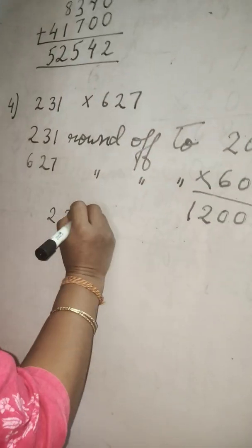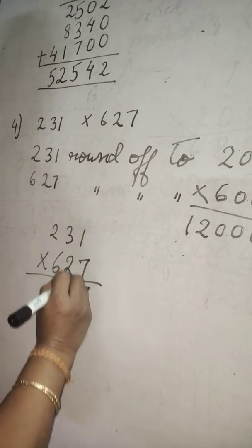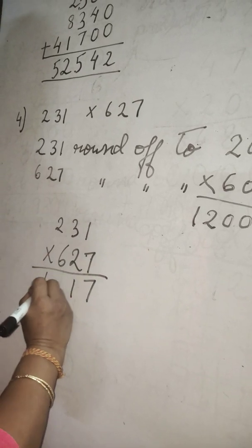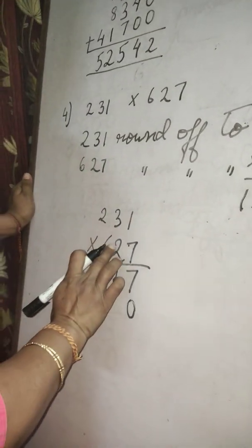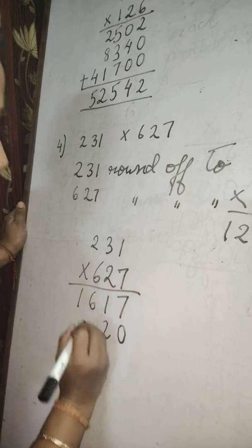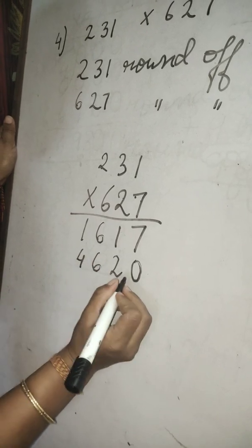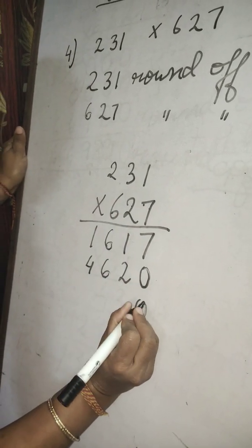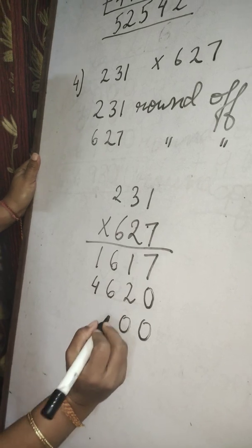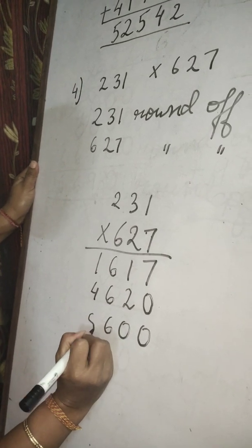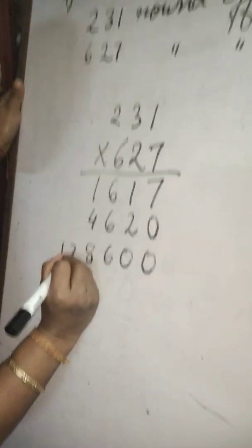Now find the exact product. 7 times 1 is 7. 7 times 3 is 21, write 1 carry 2. 7 times 2 is 14 plus 2 is 16. Leave the first place: 2 times 1 is 2. Now multiply with the third digit — leave first and second place: 6 times 1 is 6. 6 times 3 is 18, carry 1. 6 times 2 is 12 plus 1 is 13.